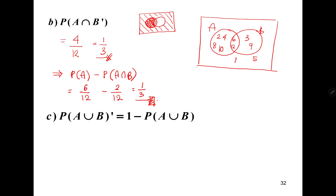For question C, the probability of (A∪B)' is 1 minus P(A∪B), so 1 - 2/3 = 1/3. You can also use a Venn diagram to illustrate this — discuss with your lecturer for the Venn diagram approach.